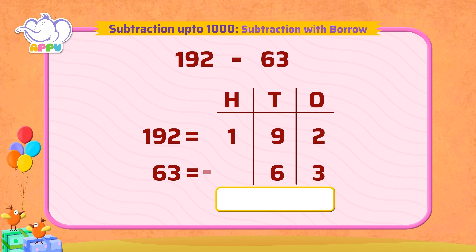We subtract ones first. We cannot subtract three from two, so we borrow from the left column, which is the tens column. When we do this, nine tens become eight tens, and then we get one to the ones column. So now we have 12.